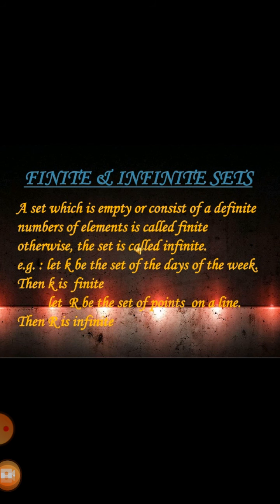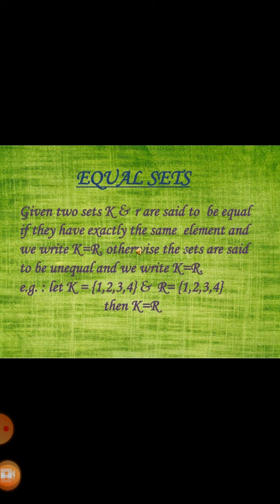Next we have equal sets. Given two sets K and R, they are said to be equal if they have exactly the same elements, and we write K = R; otherwise they are unequal and we write K ≠ R. For example, set K has four numbers: 1, 2, 3, and 4. Set R also has four numbers: 1, 2, 3, and 4. These sets K and R are equal because they contain the same elements.